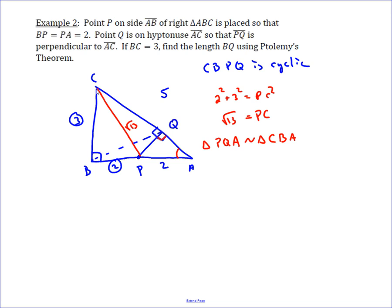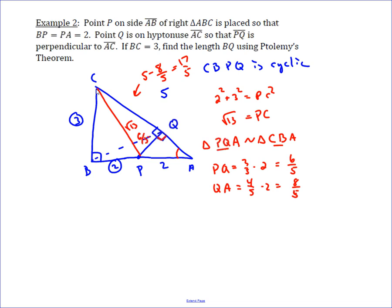Triangle PQA is also a 3-4-5 right triangle. Since CB is the short side, PQ is the short side too, because they correspond. CB is three-fifths of the hypotenuse, so PQ is three-fifths of 2 (since PA = 2 is the hypotenuse), giving PQ = 6/5. Similarly, QA is four-fifths of 2, so QA = 8/5.